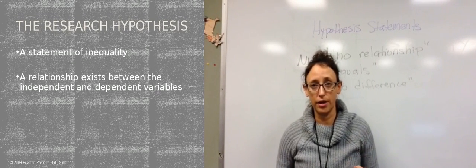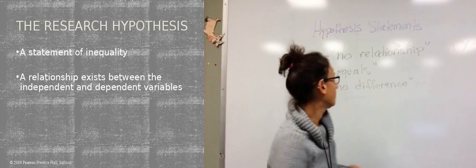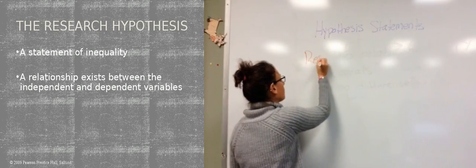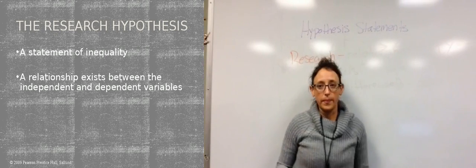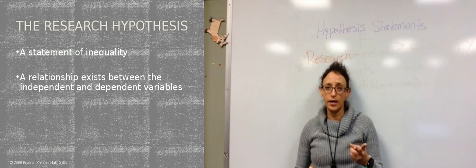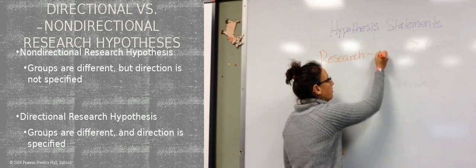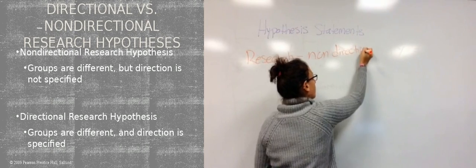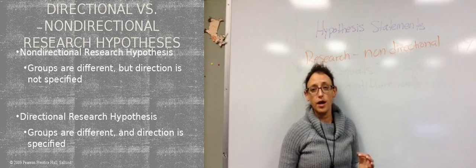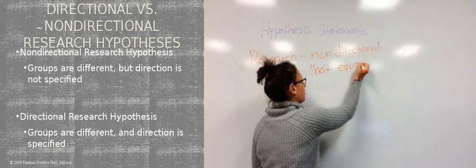The second kind of hypothesis is a research hypothesis statement. The null assumes equality; the research hypothesis assumes inequality — a relationship exists between the independent and dependent variables. We have two different kinds of research hypothesis statements: non-directional and directional. The non-directional basically states the opposite of our null hypothesis statement — we're stating the groups are different, but we're not specifying how. So we use phrases like 'not equal.'